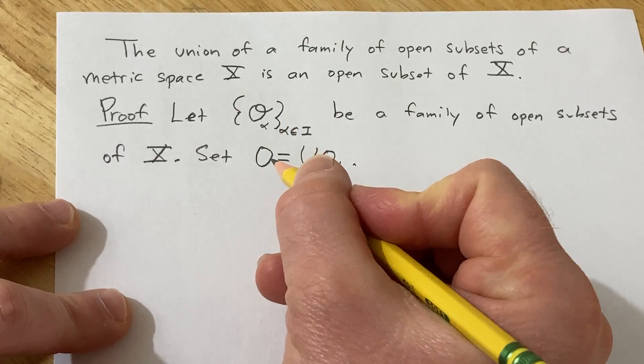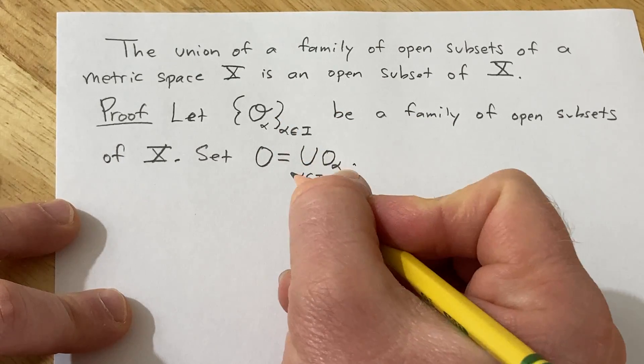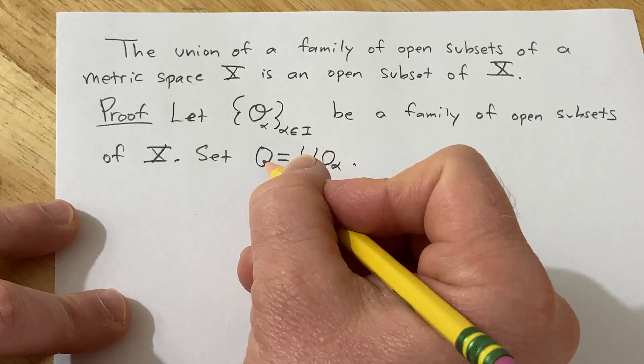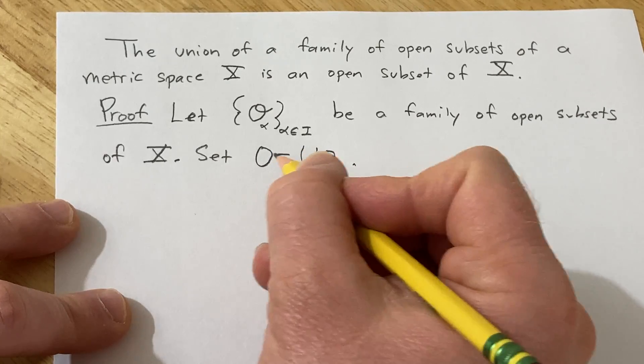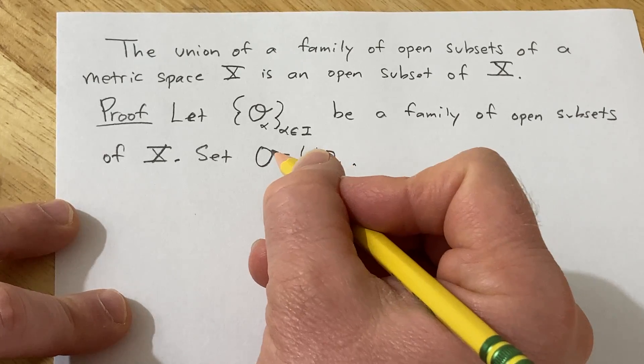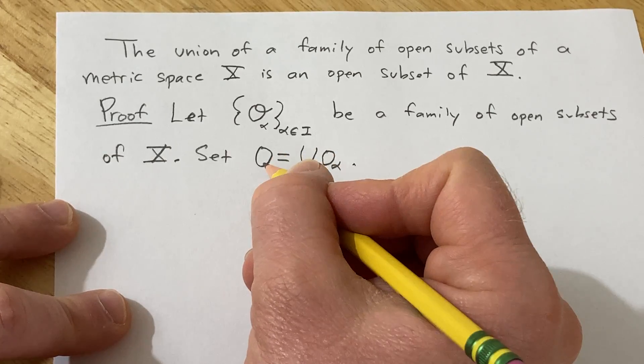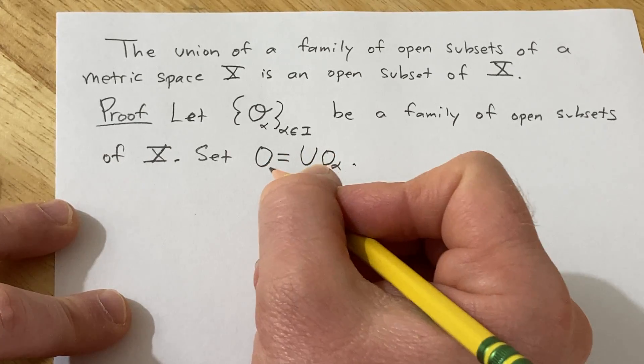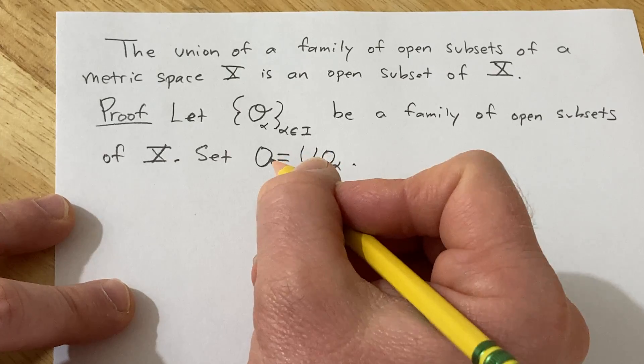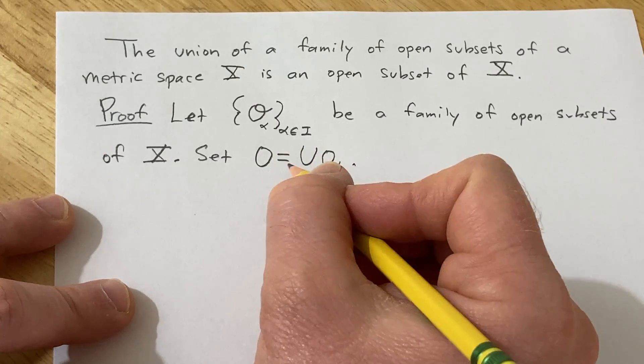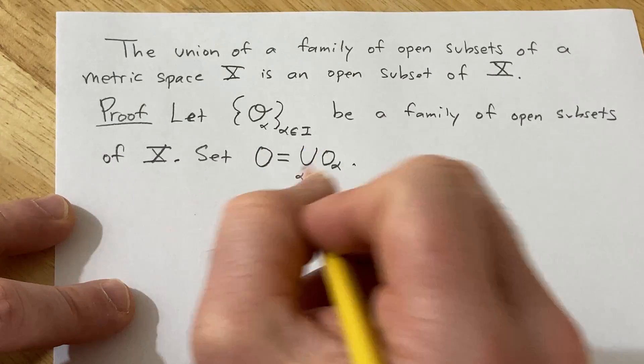So basically we have to show that it contains all of its interior points. So we'll take an element in the set and we have to show it's an interior point. So that means that for every element in the set we should be able to find some open ball centered at that element of positive radius that's contained entirely in this set. Okay, so let's try it.